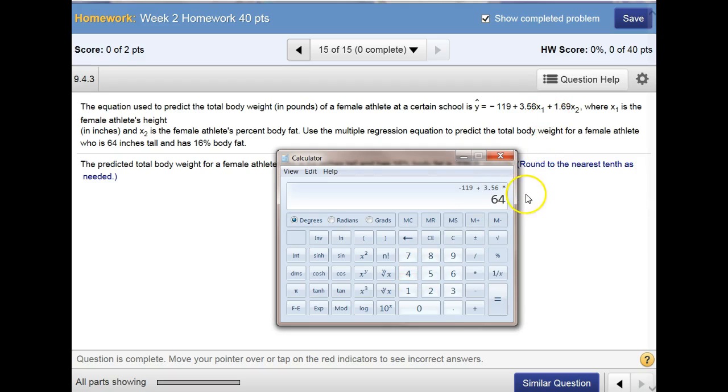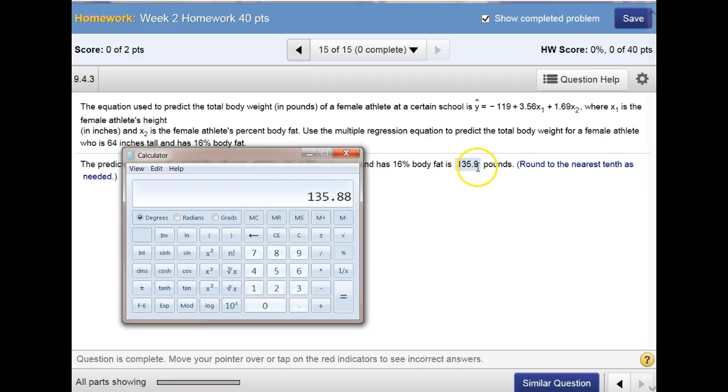And then plus 1.69 times the percent body fat, so times 16 because it says percent body fat. Equals 135.88. What did they want it rounded to? To the nearest tenth. 135.88 rounded to the nearest tenth is 135.9.